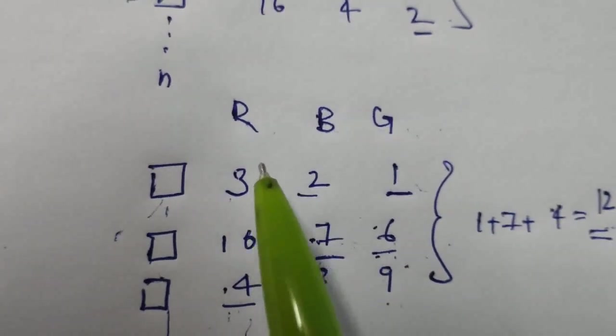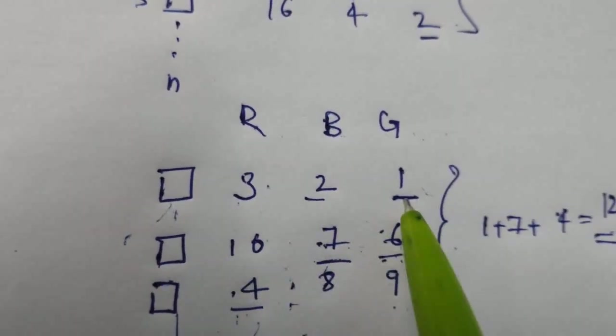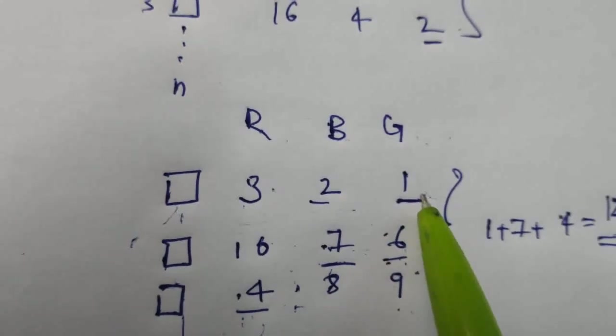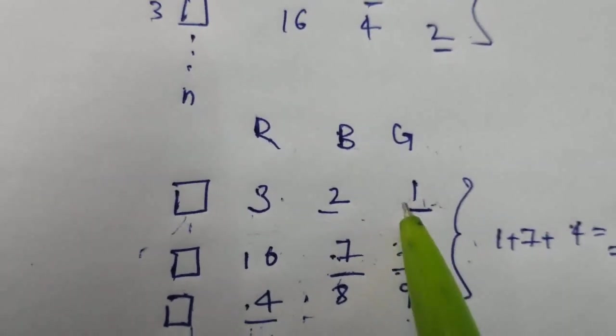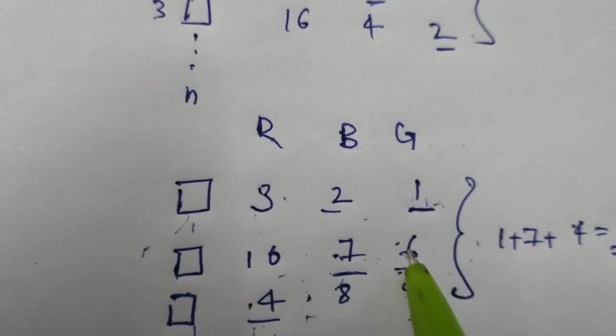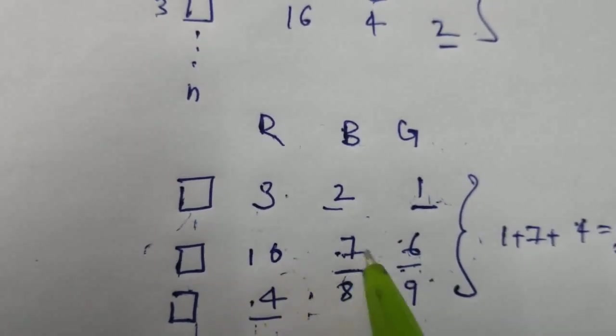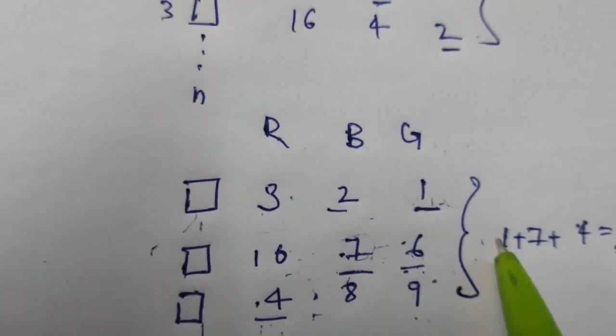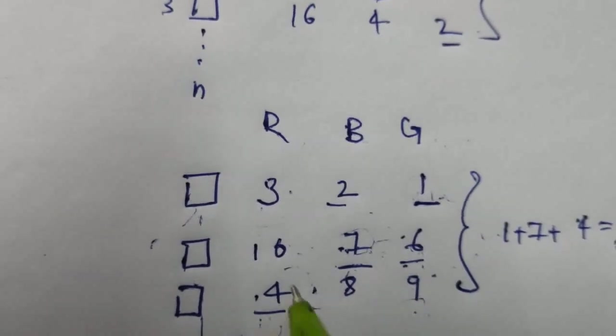Let us take house number 1. If you see, 1 is the minimum one which we can take. So 1 plus, in the second one we can't paint it with green, so we have to go with red or blue, which is 7 is the minimum, so we will go with 7.